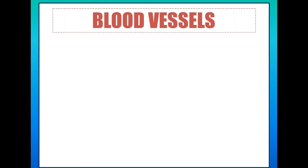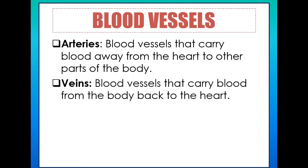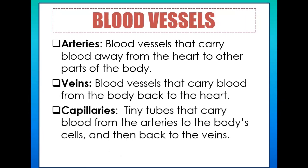Blood vessels form a transporting system that allows blood to properly circulate throughout the body, providing a way for blood to move from one place to another. Using an analogy, blood vessels are somewhat like a system of roads with freeways, secondary roads, and alleys. There are three types of blood vessels that differ in shape, structure, and function.